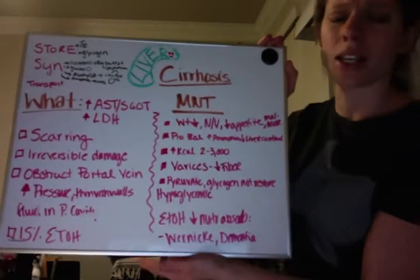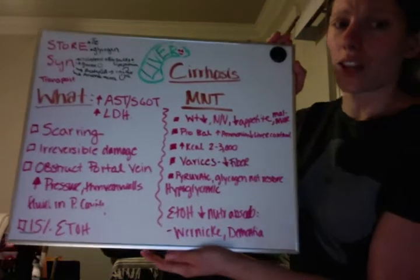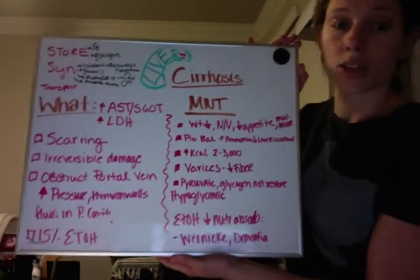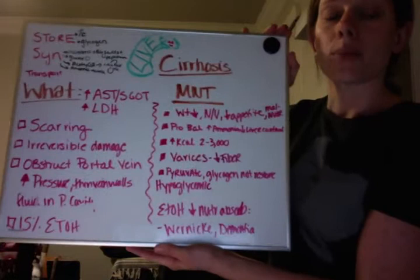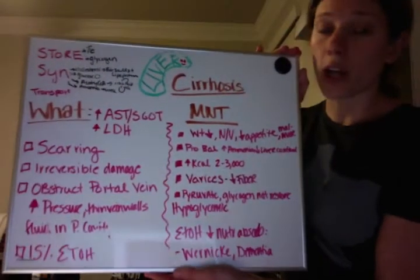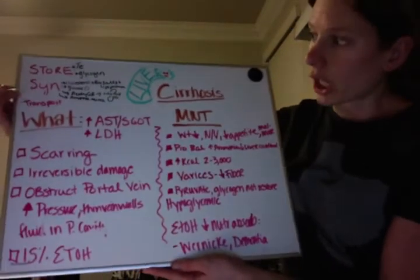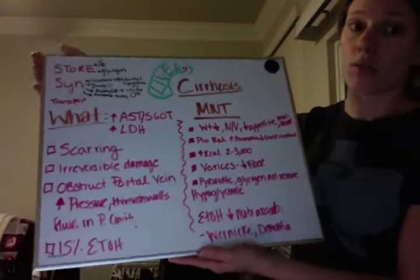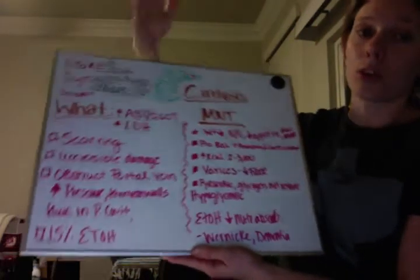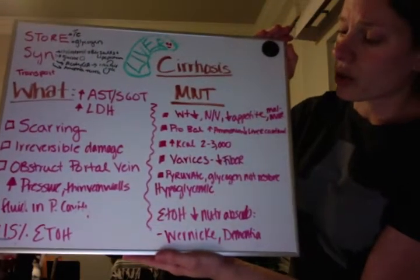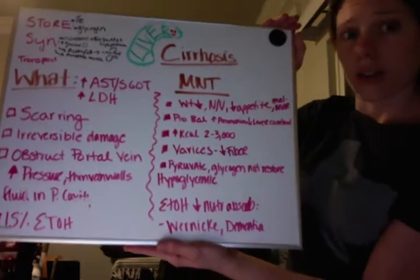Protein balance is a little bit of a juggle. We want to make sure they have enough protein so their liver can heal and build up those tissues, but at the same time we don't give them too much, because we know the liver is what converts ammonia to urea. When our liver is damaged, it can't do that, and ammonia levels rise.